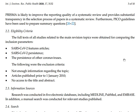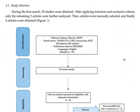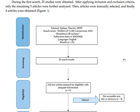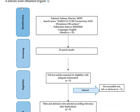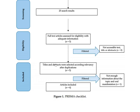PICO guidelines were used to properly summarize questions and reliability criteria. The full text of all studies related to the domain and virus types were obtained for compiling the inclusion parameters. During the first research, 25 studies were obtained. After applying inclusion and exclusion criteria, only five remaining articles were further analyzed. Articles were then manually selected and finally four articles were obtained. This step covers identification, screening, eligibility, and inclusion.